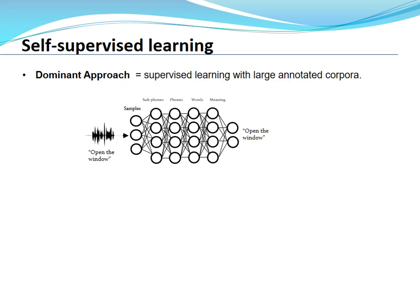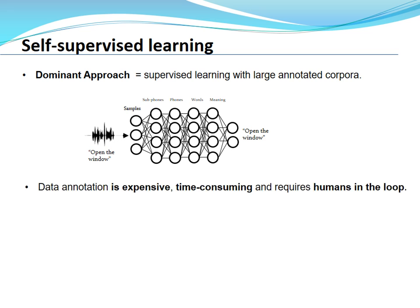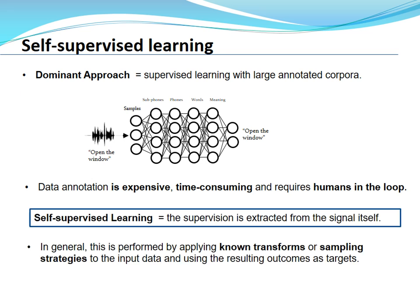Why do we need self-supervised learning? The current dominant approach in deep learning is still supervised learning with large annotated corpora, but data annotation is expensive, time-consuming, and requires humans in the loop. A natural alternative is to combine standard supervised learning with self-supervised learning, where the supervision is extracted from the signal itself.